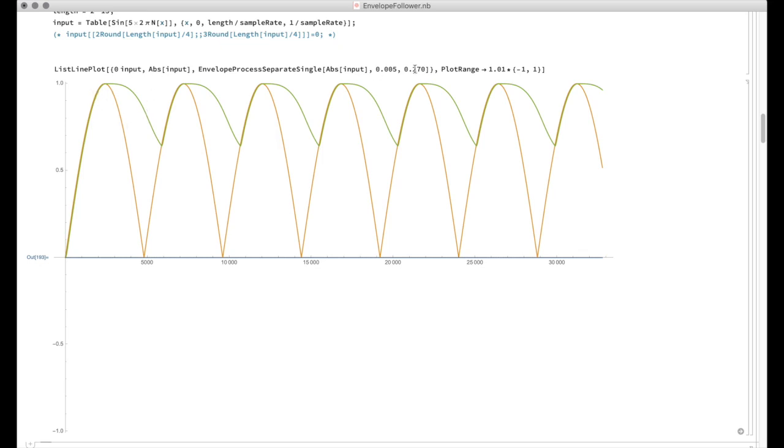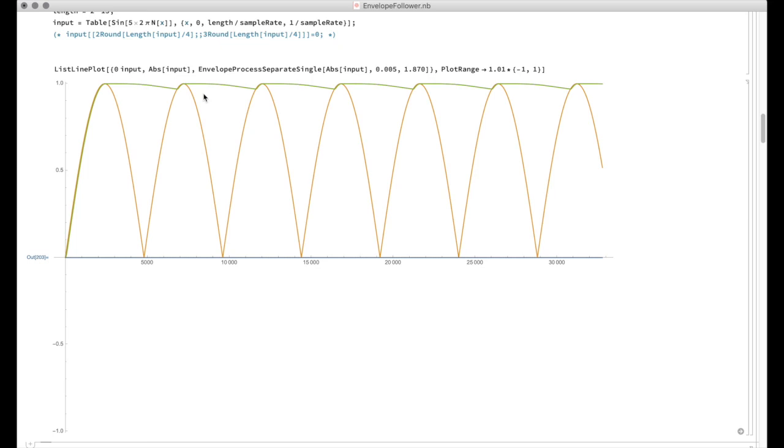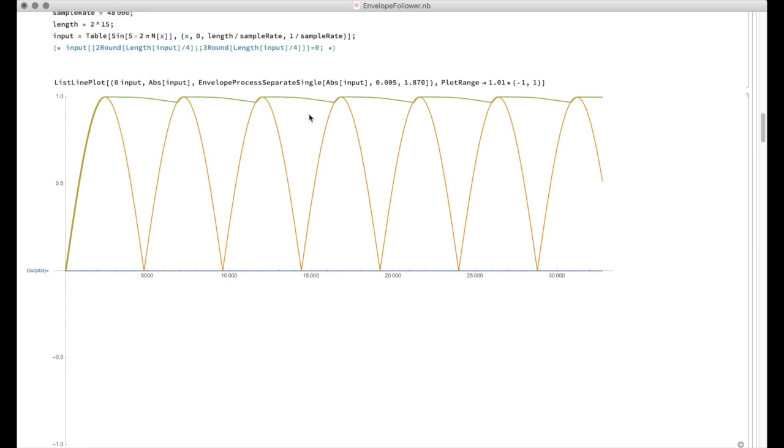What we can do to get less distortion is we can just increase the release time. So from 270 milliseconds, I'm going to go to 870 milliseconds. And you'll see now, because I'm releasing more slowly, the envelope follower has a flatter top on it. But if you've used a compressor, you know, 870 milliseconds is a long release time. That's almost one second. Let's look at how far I would have to go up to get this release to actually look like it's drawing a flat line. I'm at 1.8 seconds release time. Obviously, this is way too long, but there's good news for us.